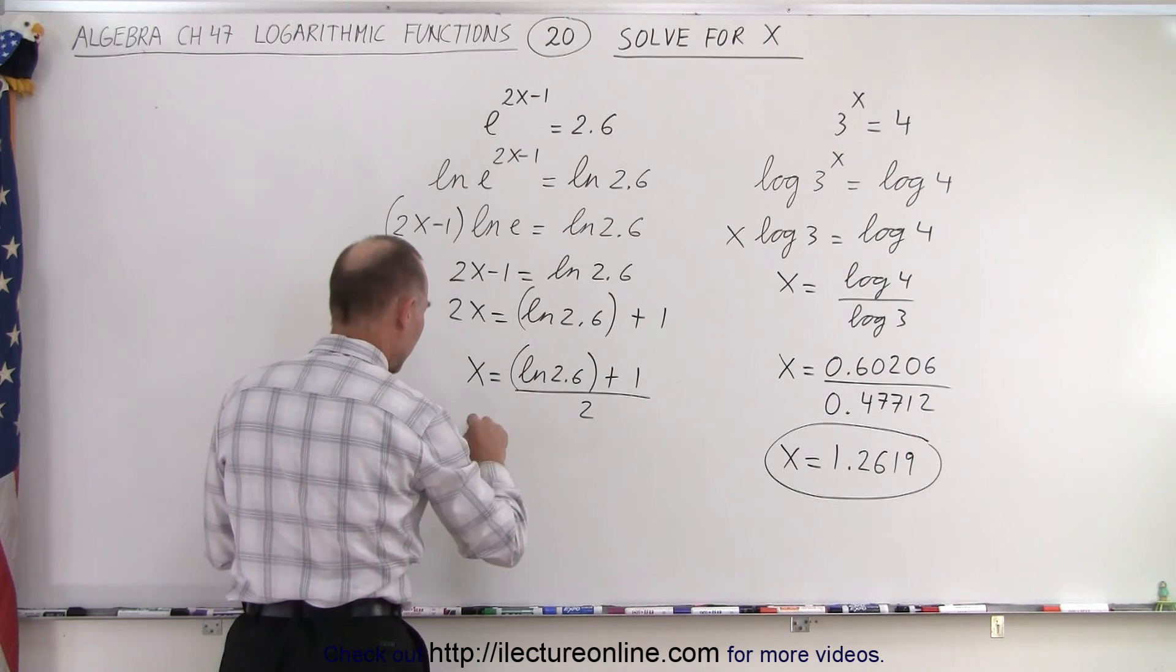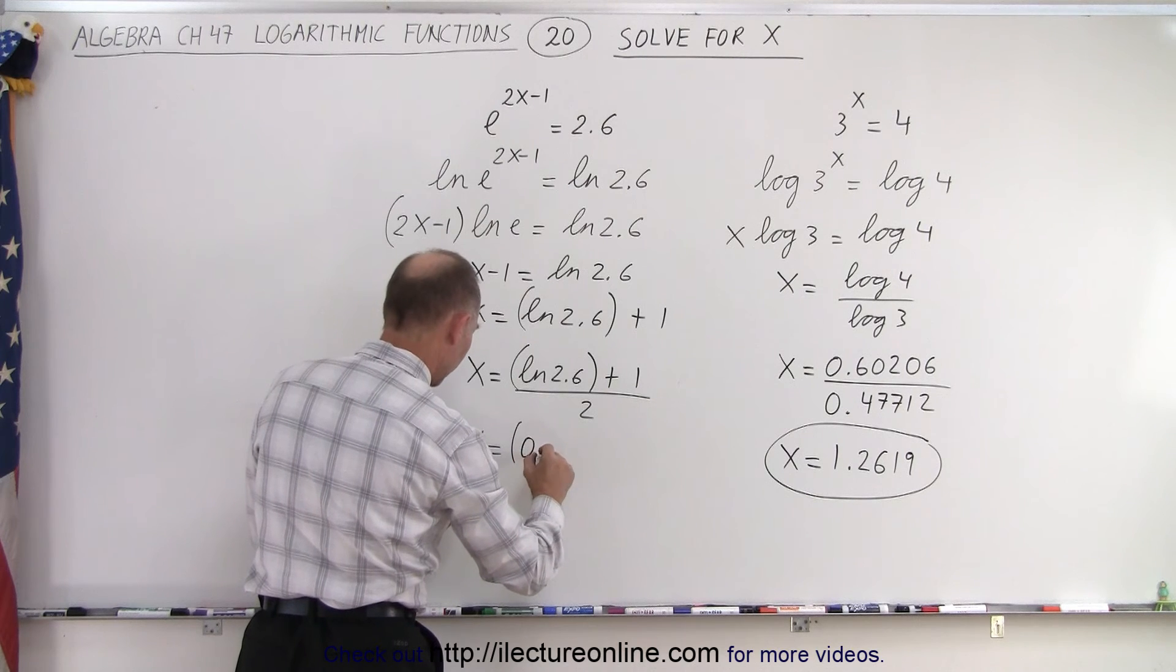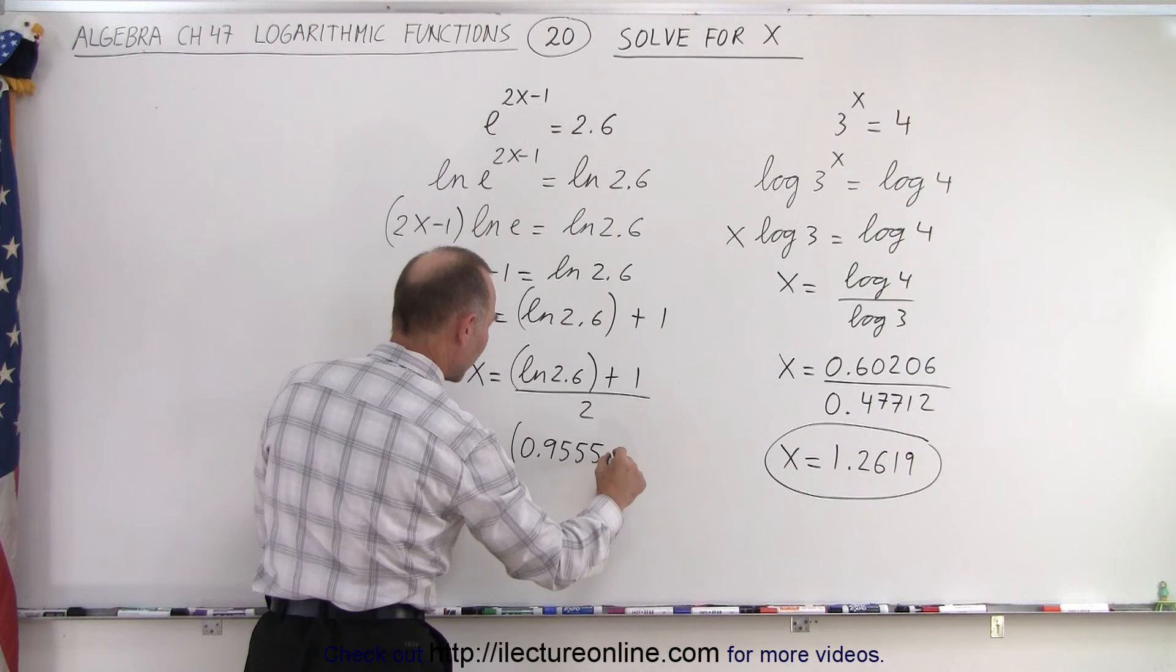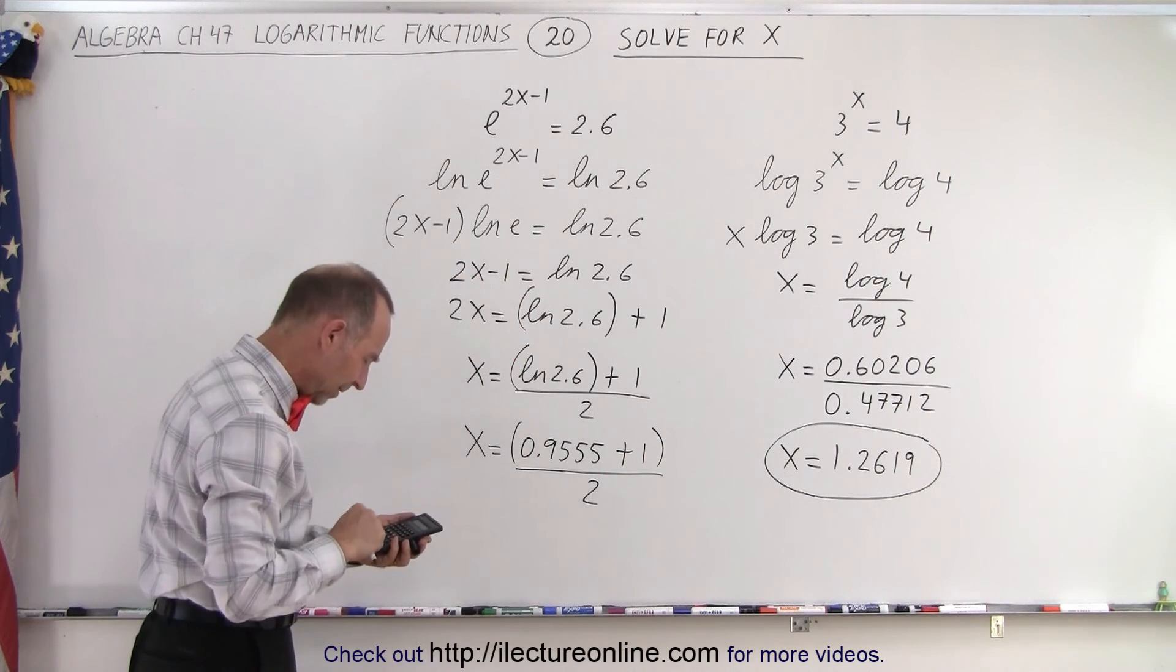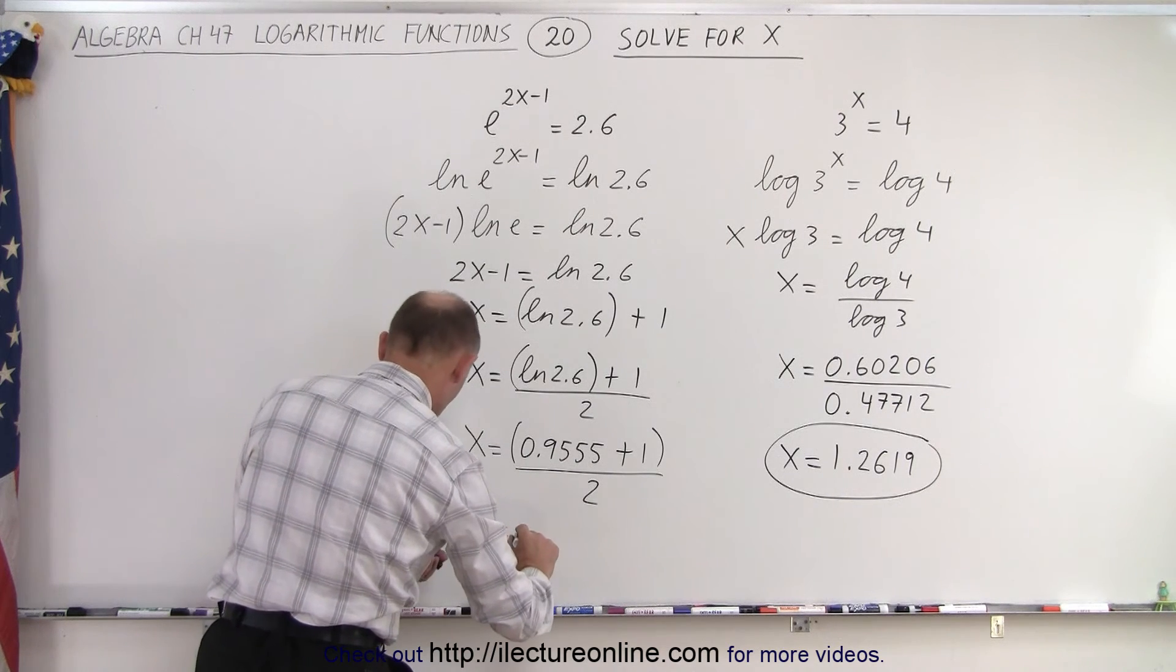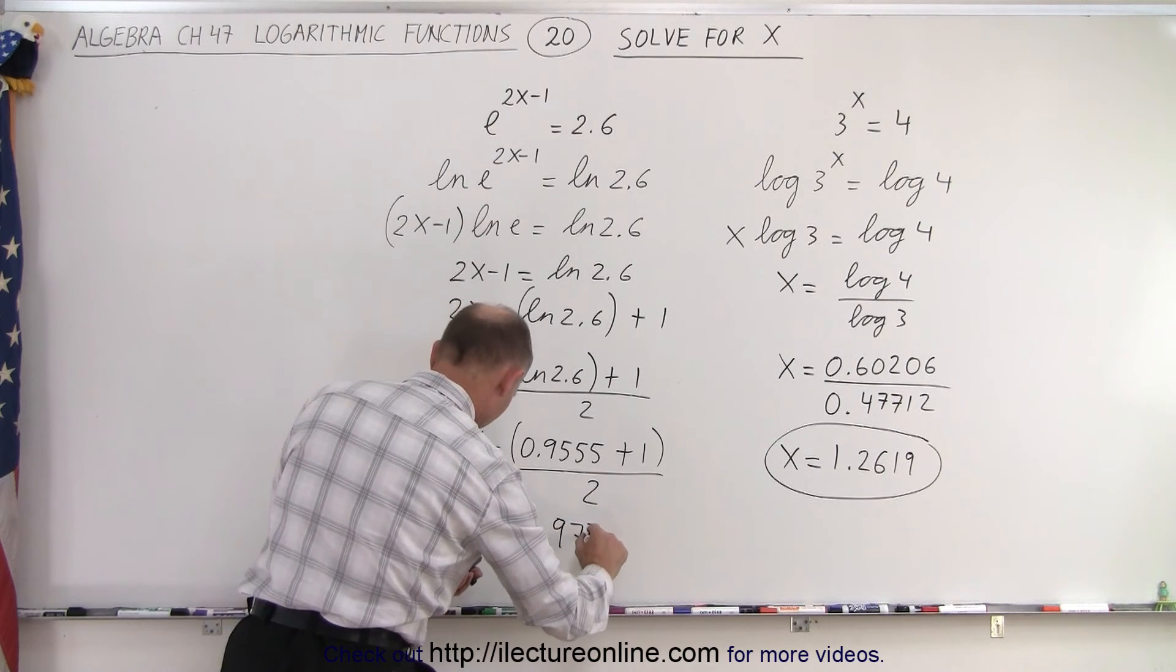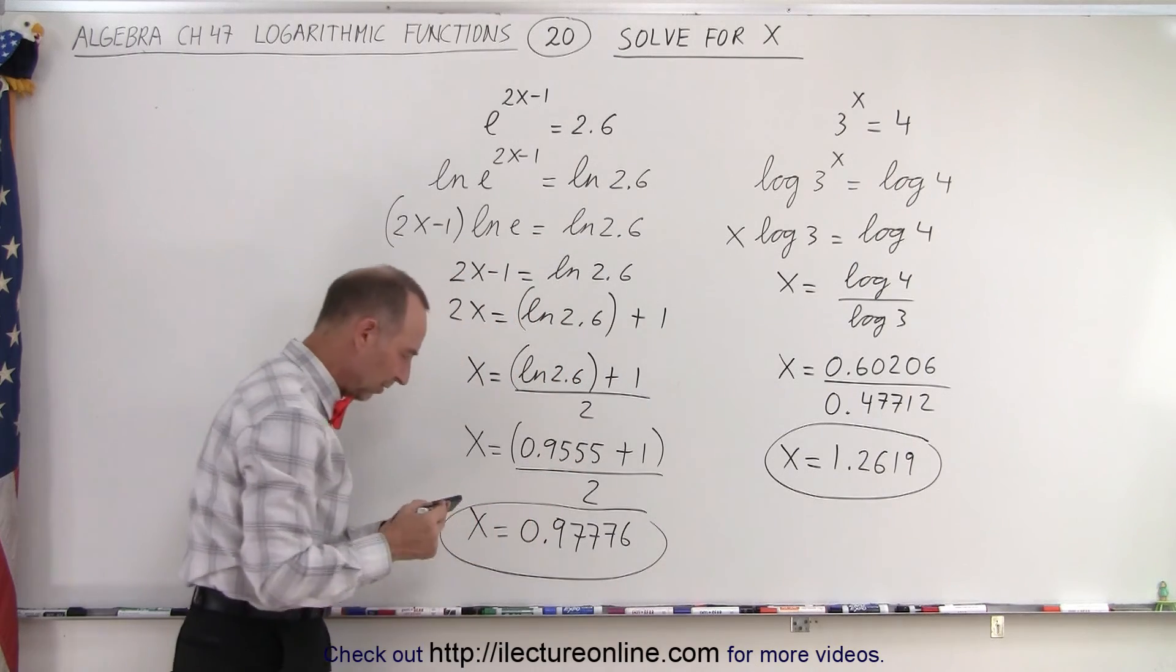This gives x = (0.9555 + 1)/2. Add 1 to that, divide by 2, and we get x = 0.97776 to five decimal places.